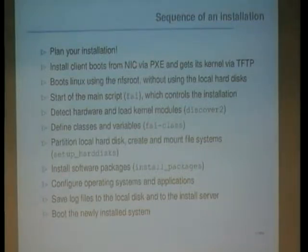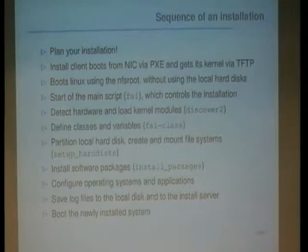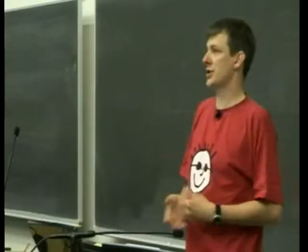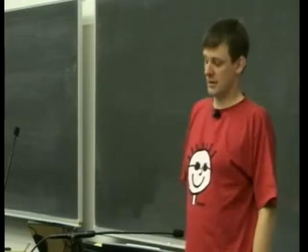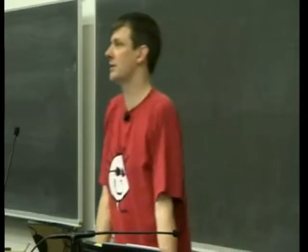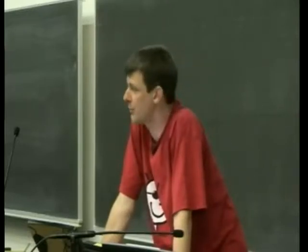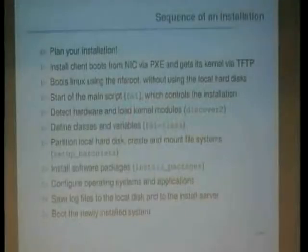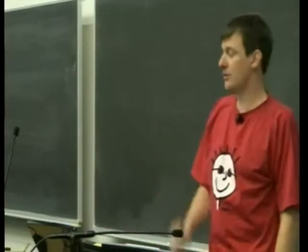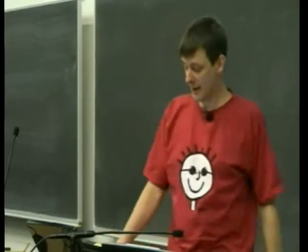The main script is a shell script that controls the whole installation sequence. We do hardware detection using Discover 2, but you can also define kernel modules to load if Discover 2 doesn't detect certain hardware. Then we define classes and variables. We have a partitioning tool written in Perl that uses sfdisk. After partitioning, we mount the file systems, do the software installation, save all log files to the local disk and also to the install server, then reboot the new machine.